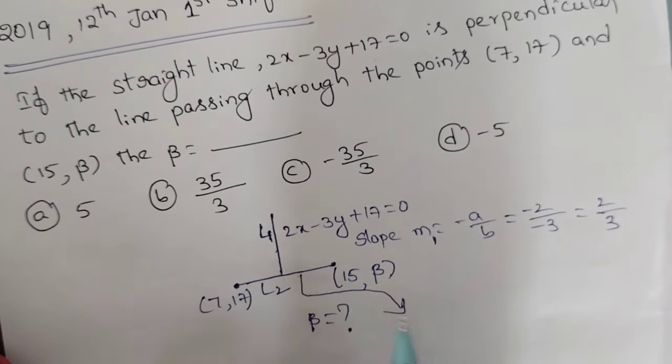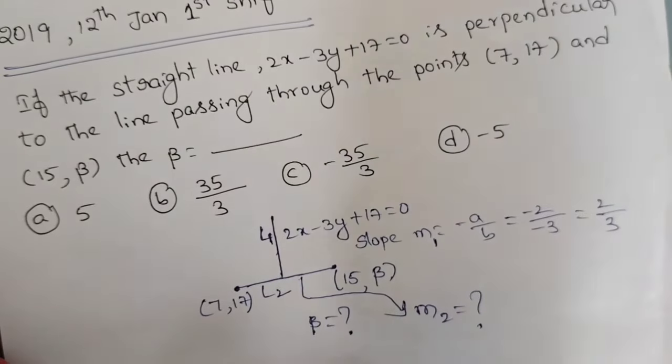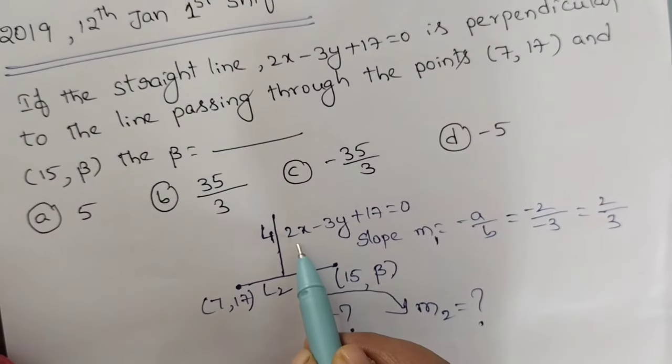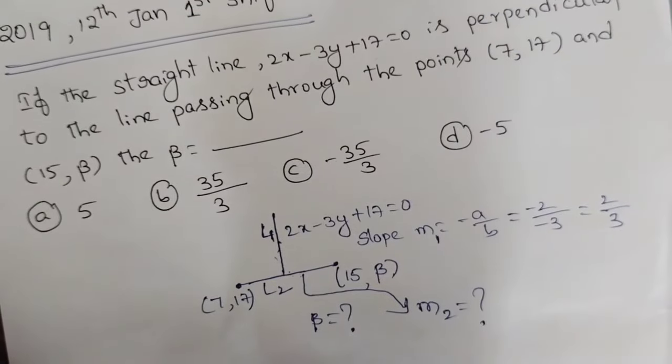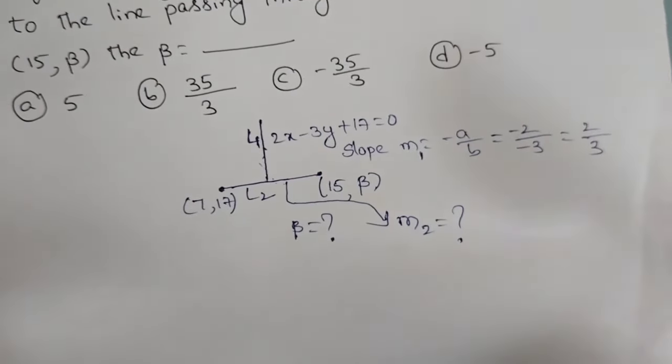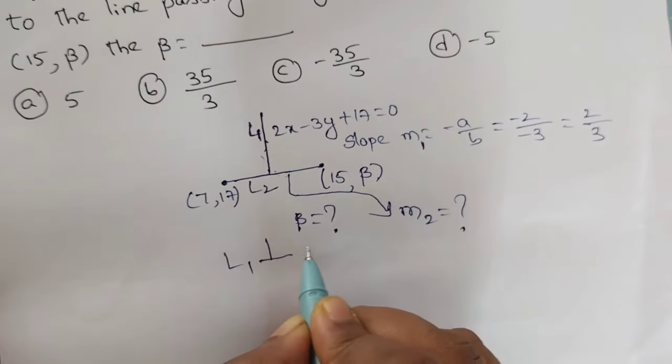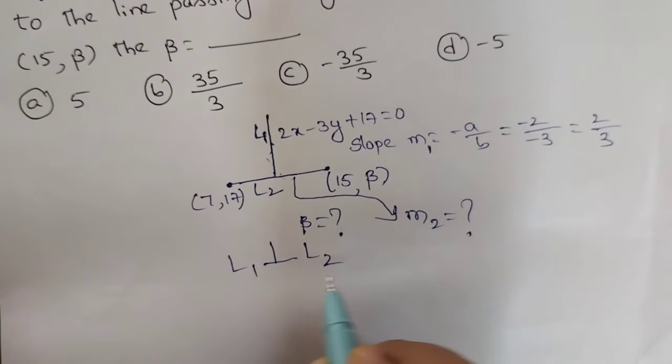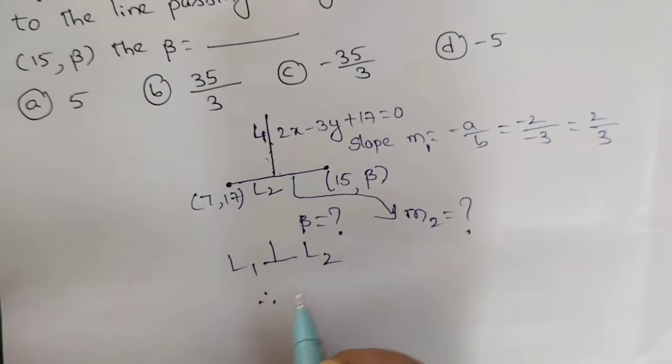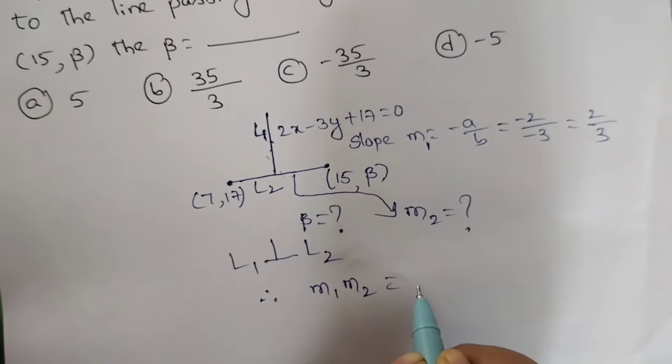Next, line 2 slope. If you observe, line 1 and line 2 both are perpendicular. The condition for slopes when two lines are perpendicular is the product of two slopes equals minus 1. So L1 is perpendicular to L2, then m1 times m2 equals minus 1.